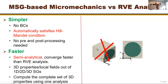This approach is semi-analytical, converges faster than full numerical analysis, and computes 3D properties and stress/strain fields from 1D, 2D, or 3D analyses. For fiber-reinforced composites, traditional RVE requires a 3D block, but MSG only needs the 2D domain — reducing complexity and computational cost. MSG also computes the complete set of 3D properties in one single analysis, whereas RVE requires six separate analyses to get all 3D properties.